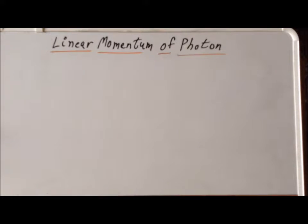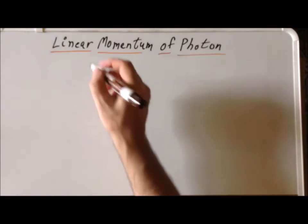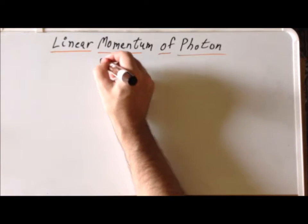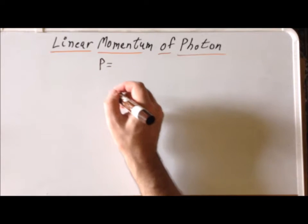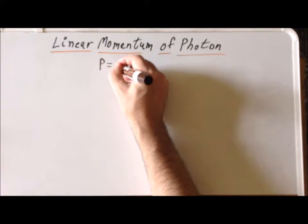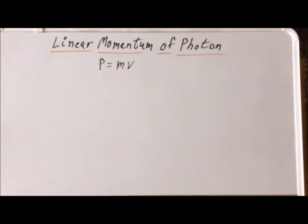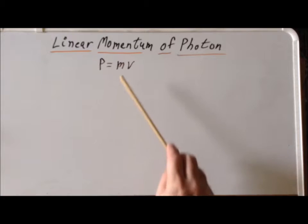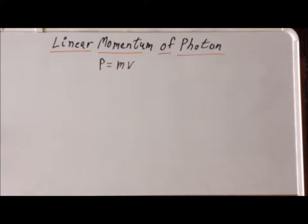In this video, we are going to calculate the linear momentum of a photon. In classical mechanics, you'll recall that we can calculate the linear momentum as the mass times the velocity. This runs into an immediate problem when we're talking about photons, since photons actually have a zero mass.